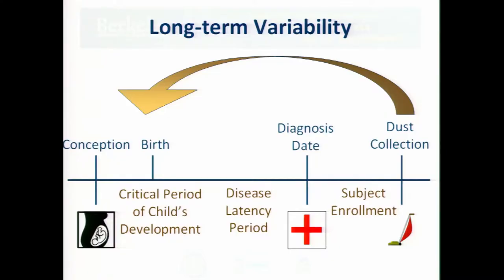Okay, so first to talk about the idea of the long-term variability of these measurements. This is just a conceptual timeline of our study. You can see that it goes from the child's birth on the extreme left all the way out to the dust collection on the extreme right. So essentially, the issue with the case control study is that we're trying to do retrospective assessment of exposures.